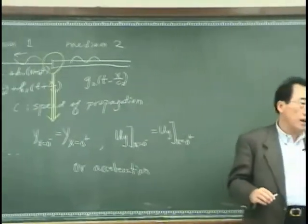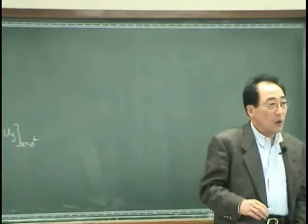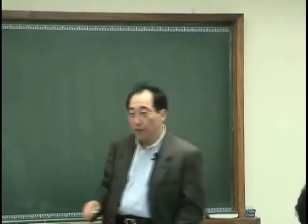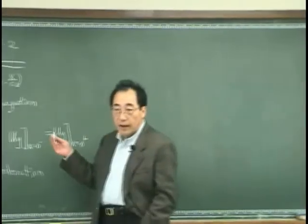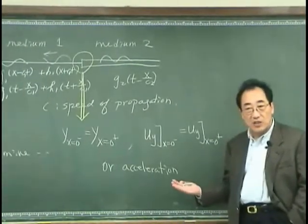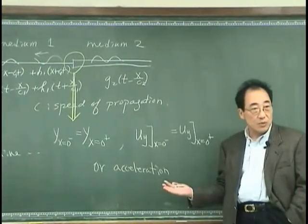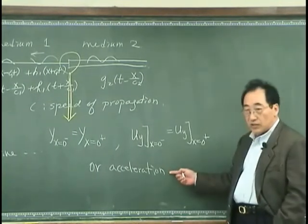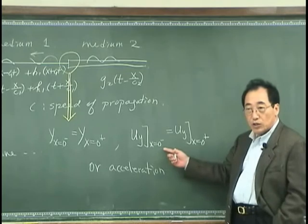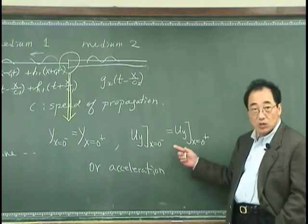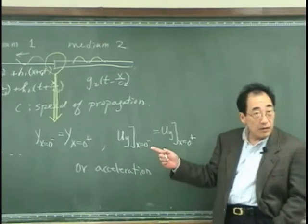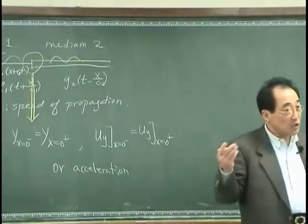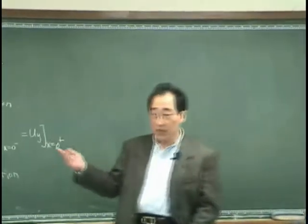But basically, those three requirements are the same if the string is initially at rest. In other words, it does not move. If I integrate this, then I will get a velocity plus the velocity at t equal zero. If the velocity at t equal zero, in other words initial velocity is zero, then the velocity must be the same.